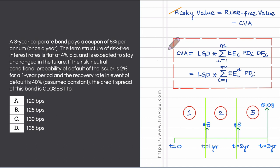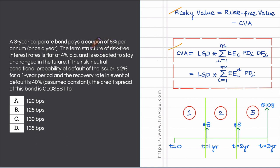Recall the formula of CVA: it is loss given default times the sum of expected exposure times the marginal probability of default times the discount factor — this product summed over the number of time intervals into which you subdivide your entire horizon. You can also multiply the expected exposure with the discount factor to get the discounted expected exposure.